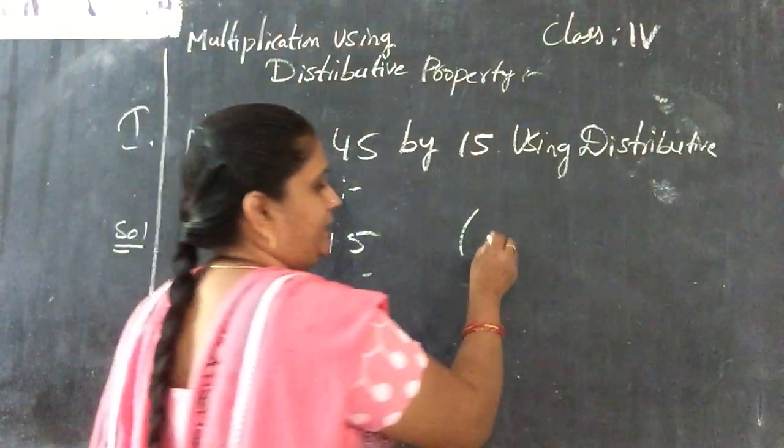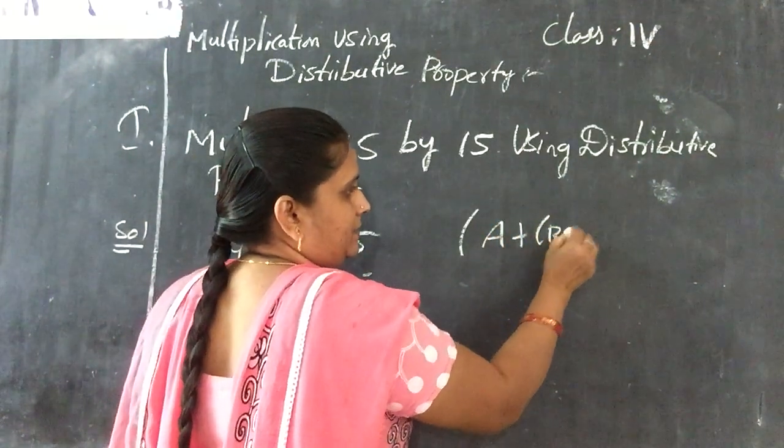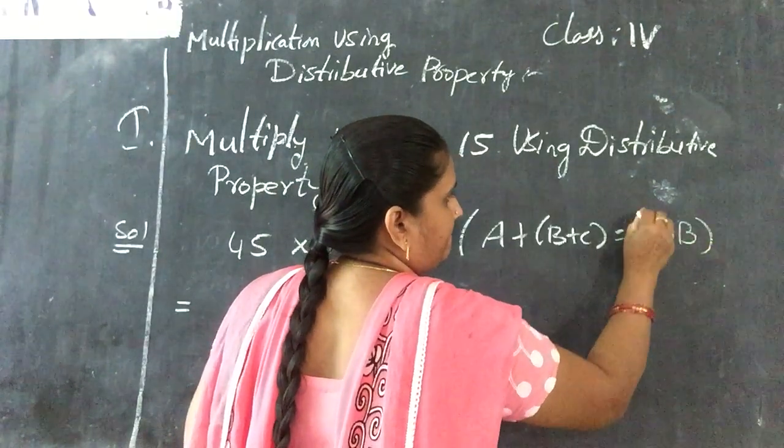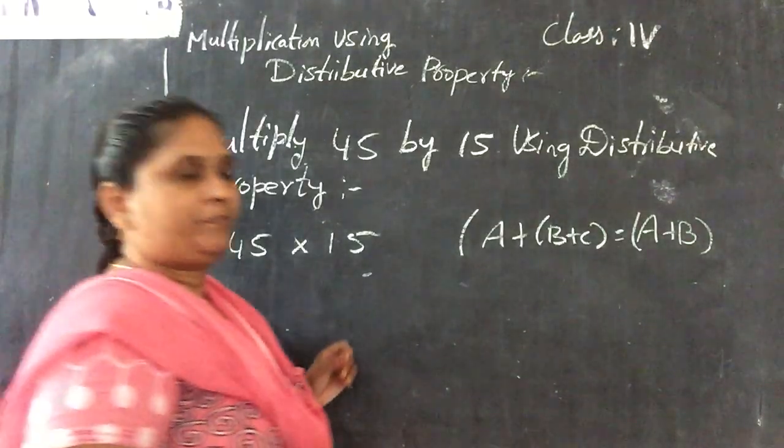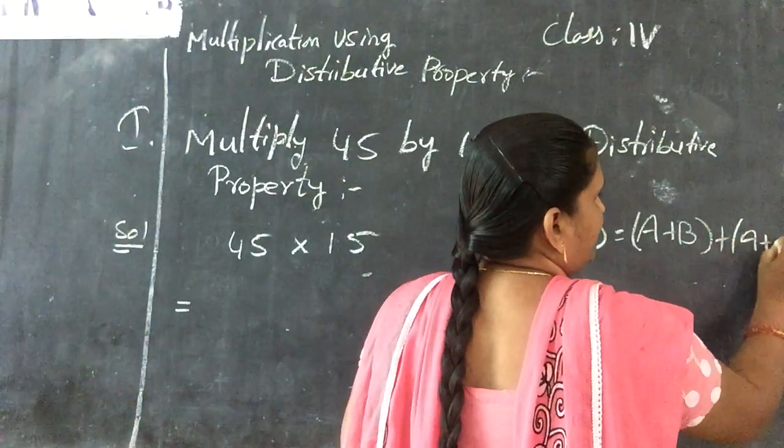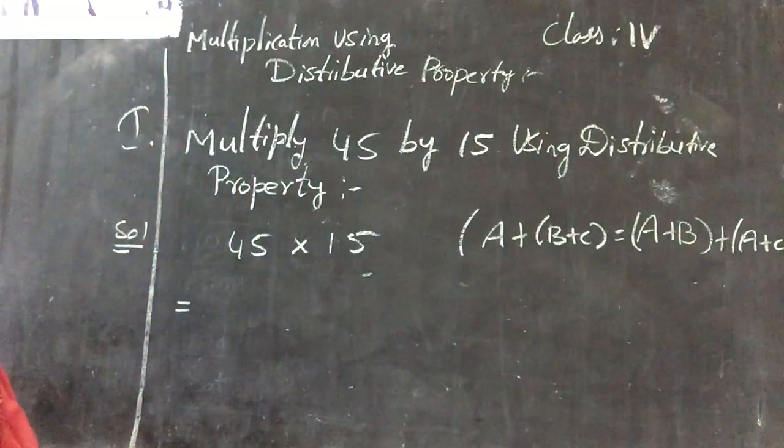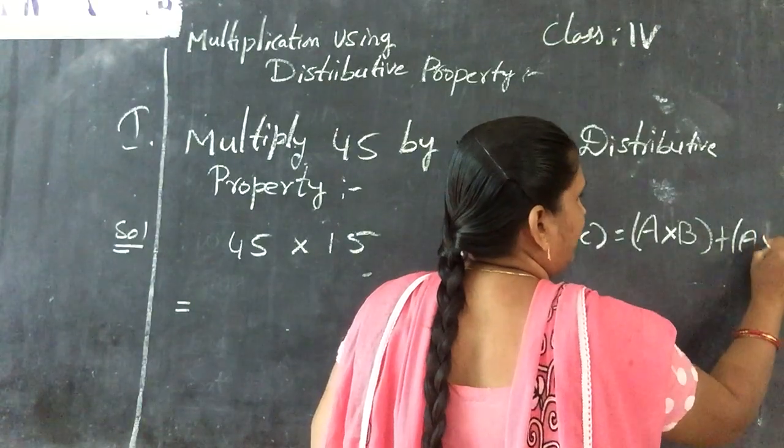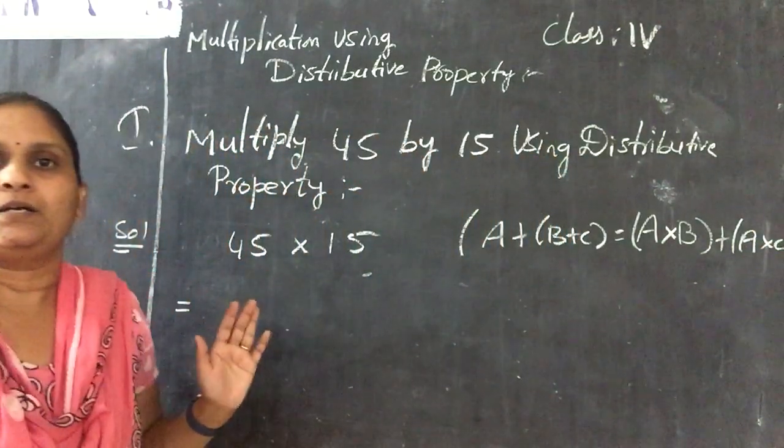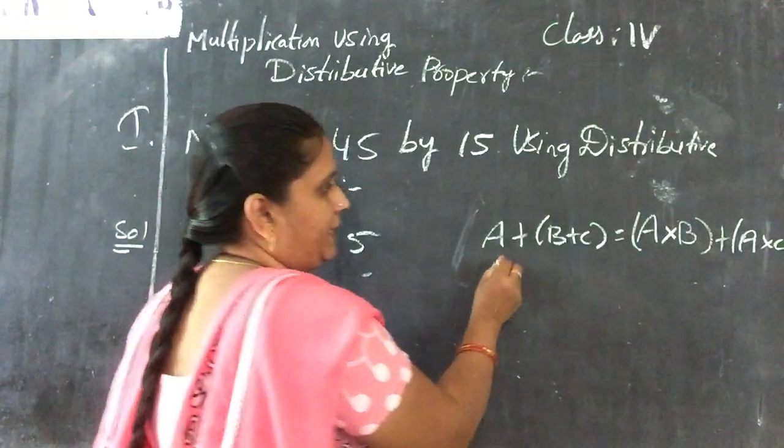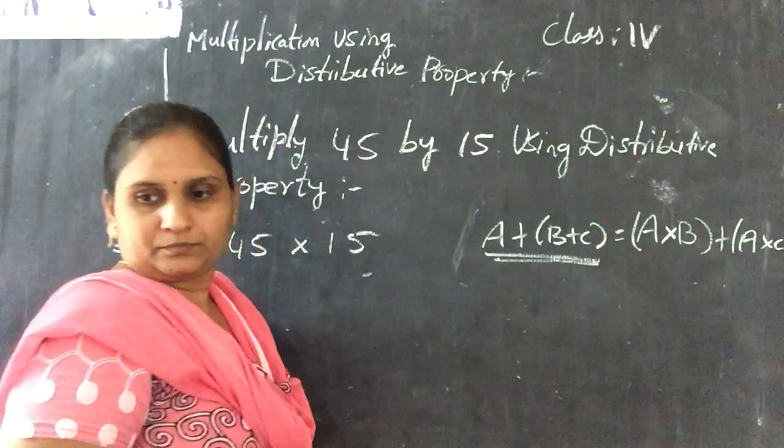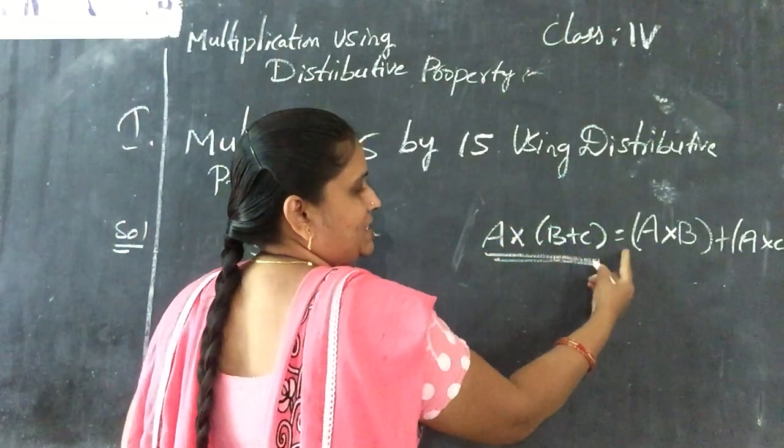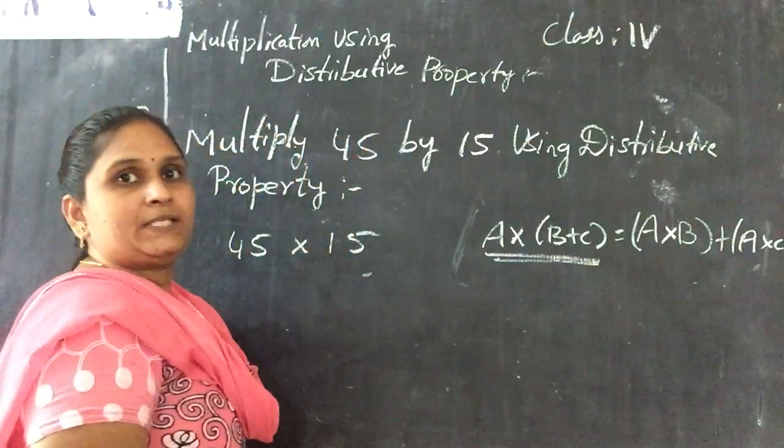What is the property here? It means A into (B+C) is equal to A into B plus A into C. This is the rule. What is that? First we have to divide the given number. Divide the given number. A into (B+C) is equal to A into B plus A into C. This is the rule.